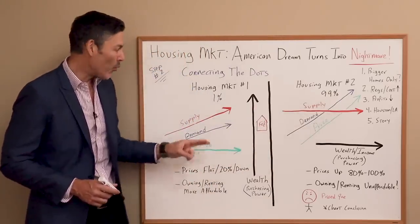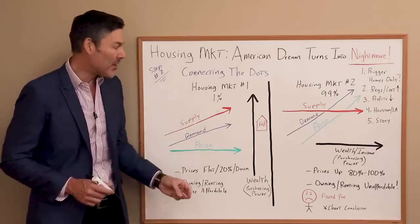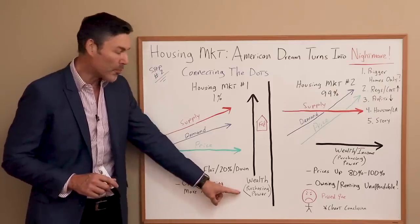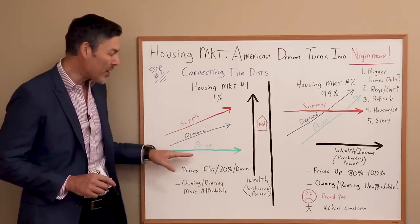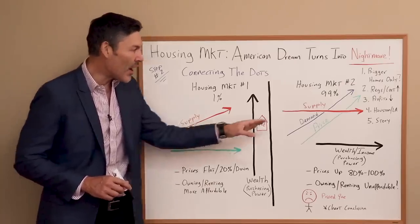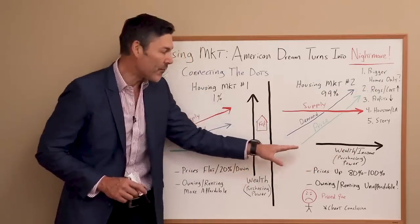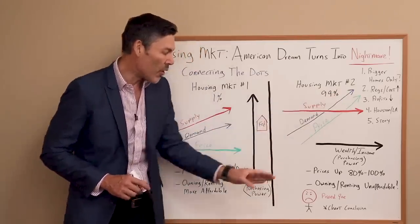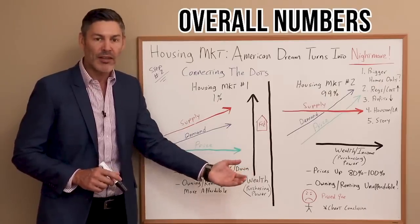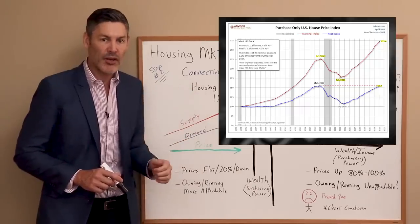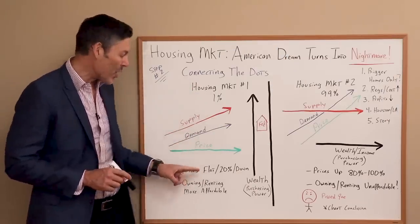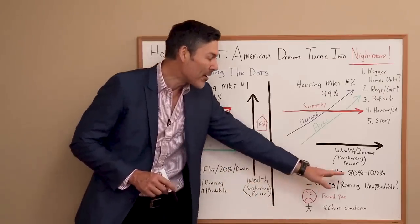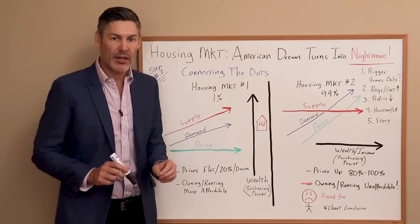Because of the Fed's quantitative easing, money printing, and the Fed put driving the stock market higher, the wealth of the 1% is increasing dramatically. So the purchasing power of the rich increases while the price they pay per square foot stays the same. It's the opposite for the 99% — their wealth and income is staying flat if not going down, so they have decreased purchasing power while their price per square foot continues to rise. That's why if we look at the overall numbers, we might see home prices up 50% adjusted for inflation. But really, for the rich, prices have remained flat — maybe up 20% — where for the rest of us, prices have gone up by probably 80% if not 100%.